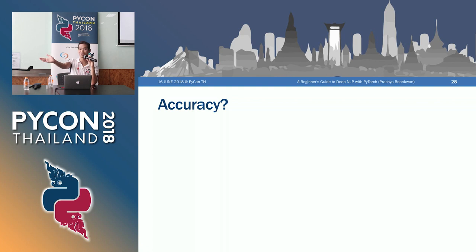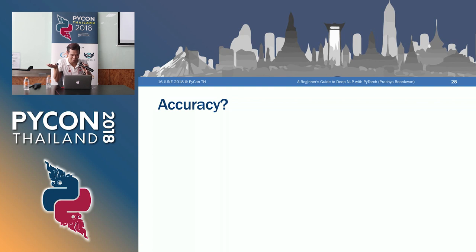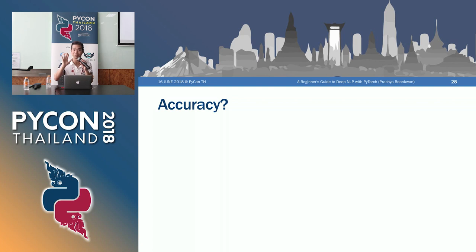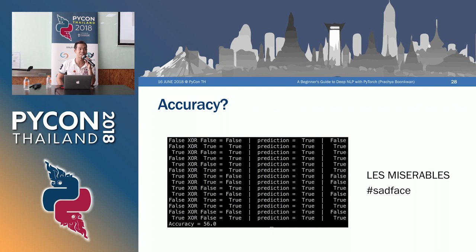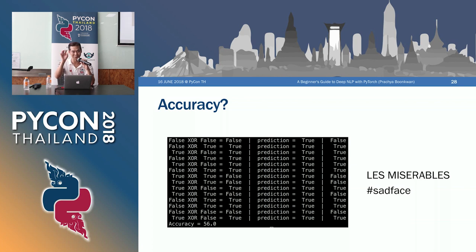The accuracy for that model is only 56% — very, very low. You cannot just come up with a random neural network, train it on data, and hope it works. There's a lot more to explore in deep learning.